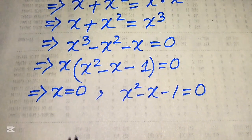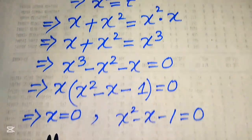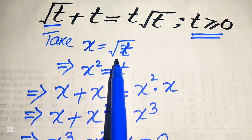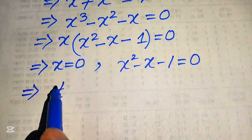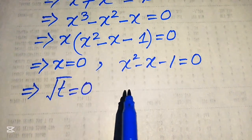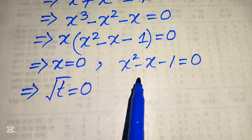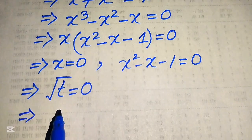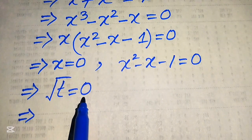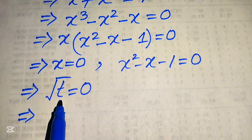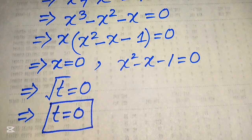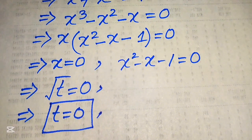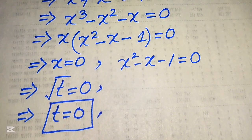In the first case, we move backward. Since we defined x equals square root of t, when x equals zero we have square root of t equals zero. Taking the square of both sides gives t equals zero. So this is our first value: t equals zero.